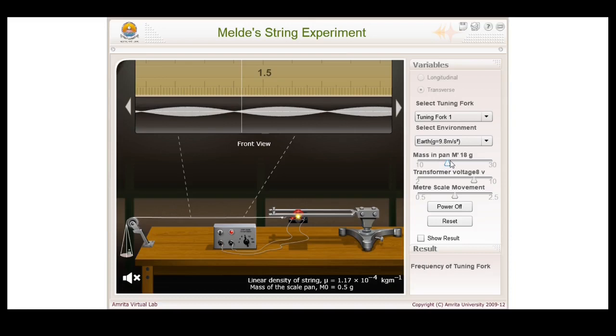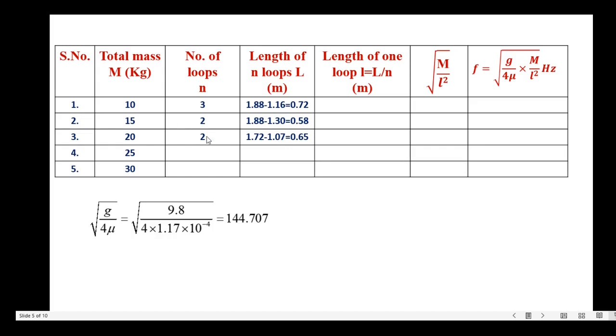Now the mass is 20 grams, and the number of well defined loops formed are again 2. Align the pointer at the left and right nodes and note down the reading. Left node reading is 1.07 and the right side reading is 1.72. Enter the readings in the table: 1.72 minus 1.07 equals 0.65.